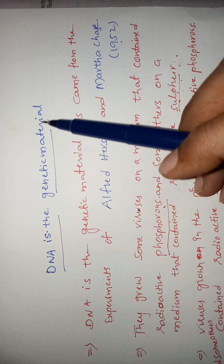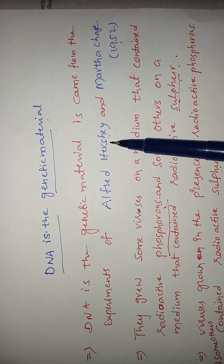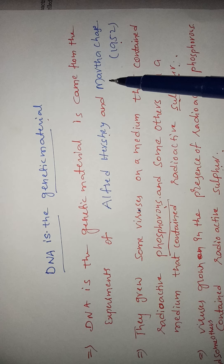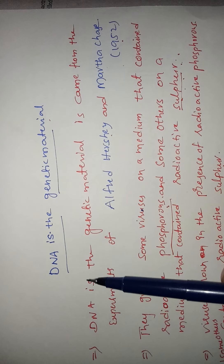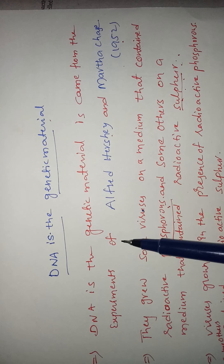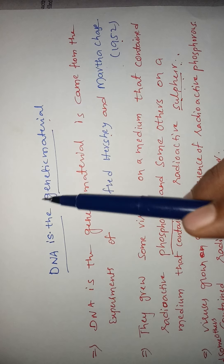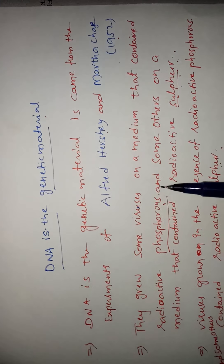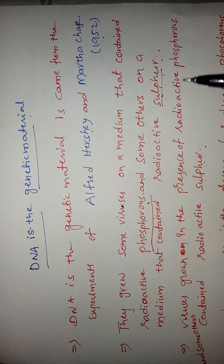DNA is the genetic material. Scientists Alfred Hershey and Martha Chase in 1952 conducted an experiment on viruses to prove that DNA is the genetic material. They grew some viruses on a media containing radioactive phosphorus and others on a media containing radioactive sulfur.